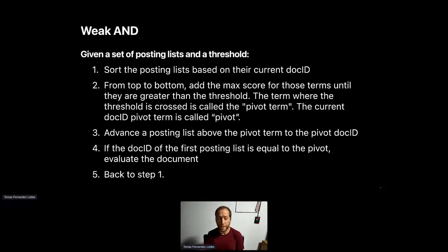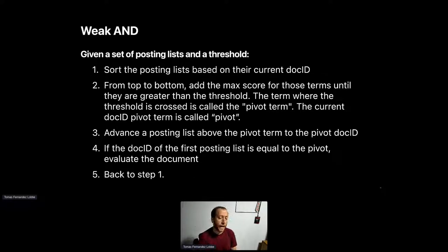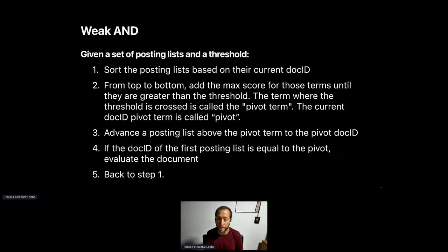The algorithm works as follows: sort the posting lists by current document ID position, then go through them top to bottom, adding the maximum impact of each term until the sum exceeds the threshold. Once it does, you've found the pivot term, and the document ID where the pivot term points is the pivot. No document between the current iteration state and the pivot is interesting, so you can advance every posting list to the pivot. If all posting lists above the pivot term are already pointing at the pivot, evaluate and score that document; otherwise repeat.